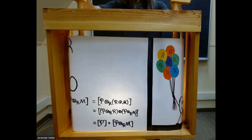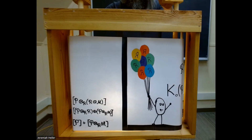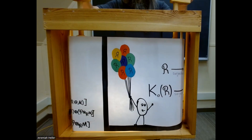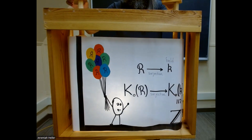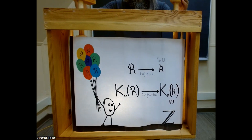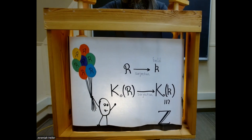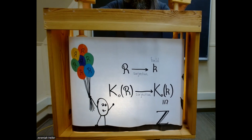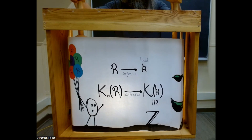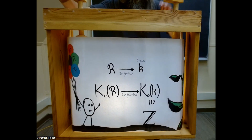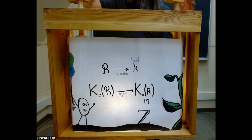This is a special property. If R is commutative, then there is a surjection from R to a field. We know that over fields, K-zero is Z, generated by rank. This forces R to have non-zero K-theory. A flask ring is thus necessarily non-commutative.